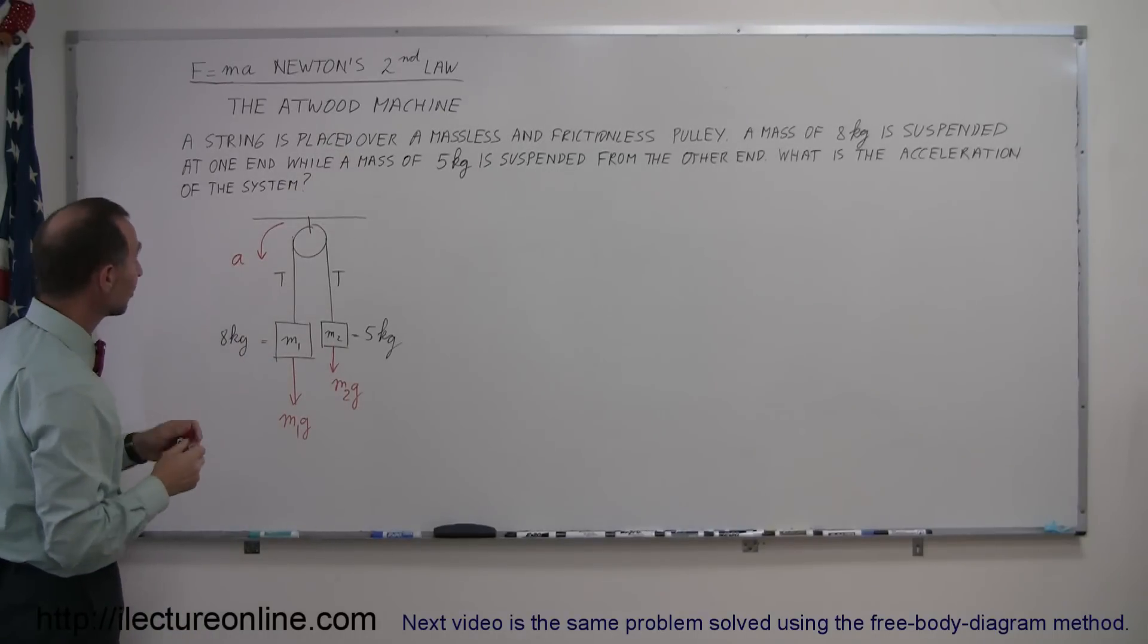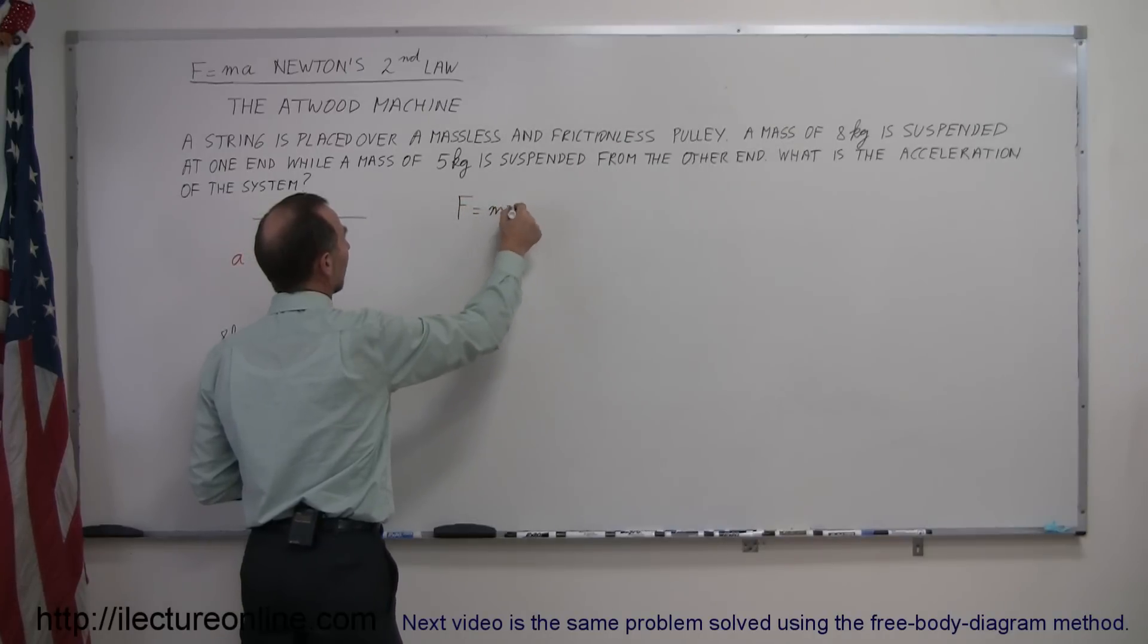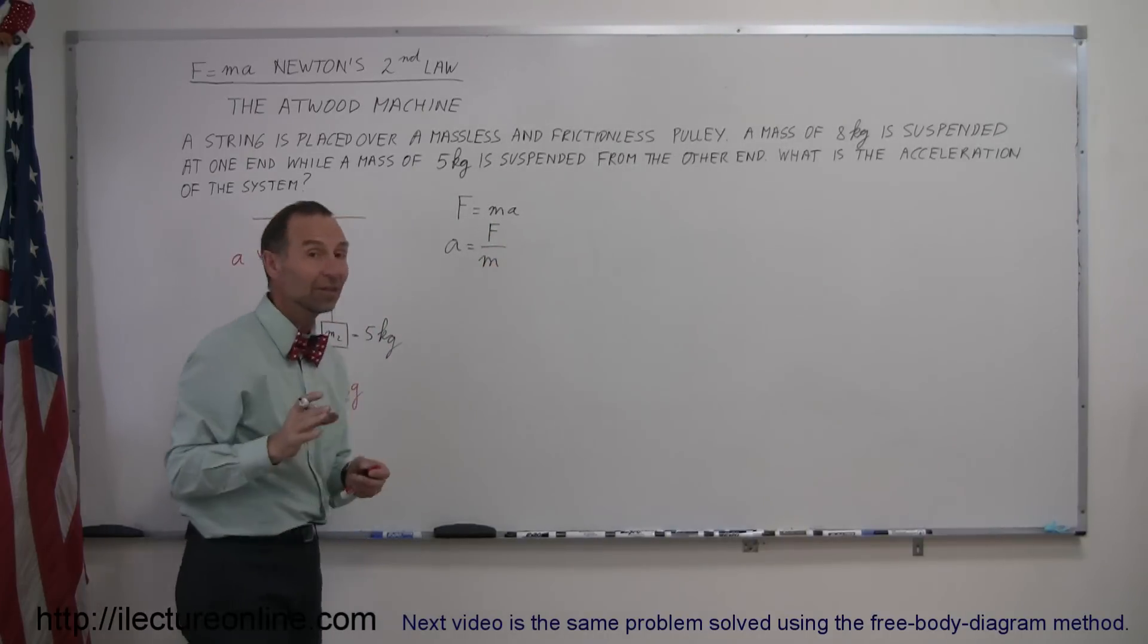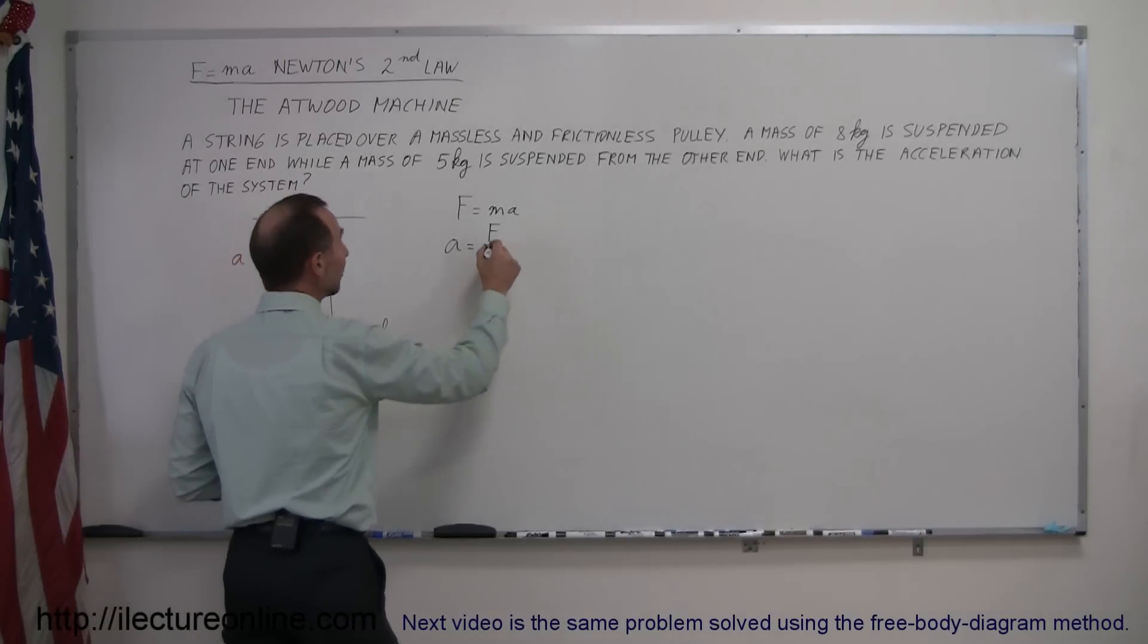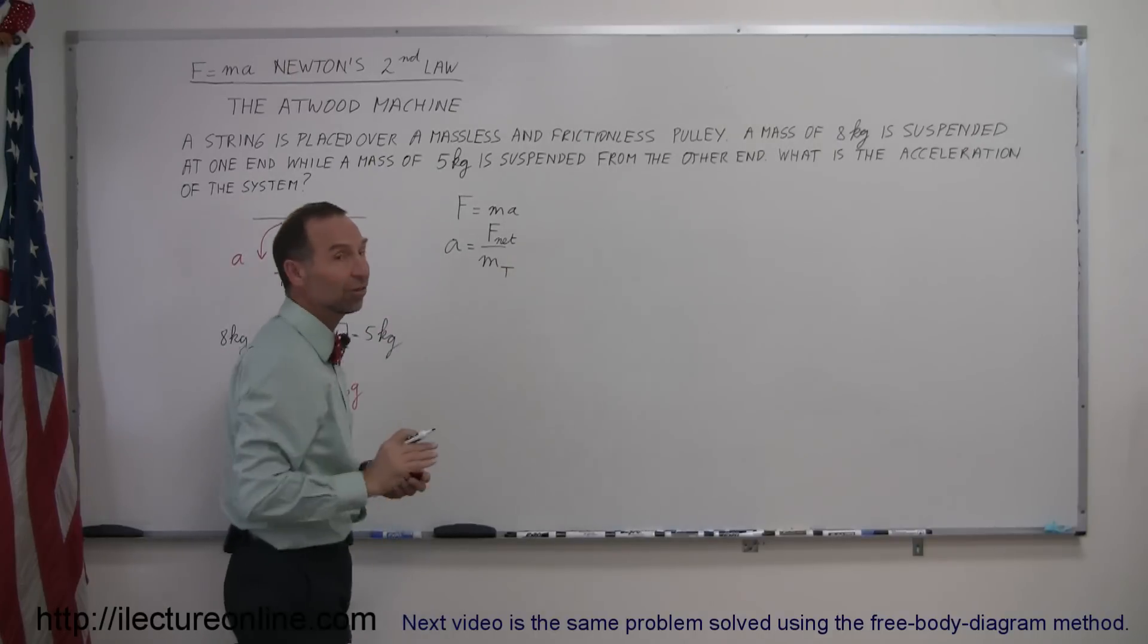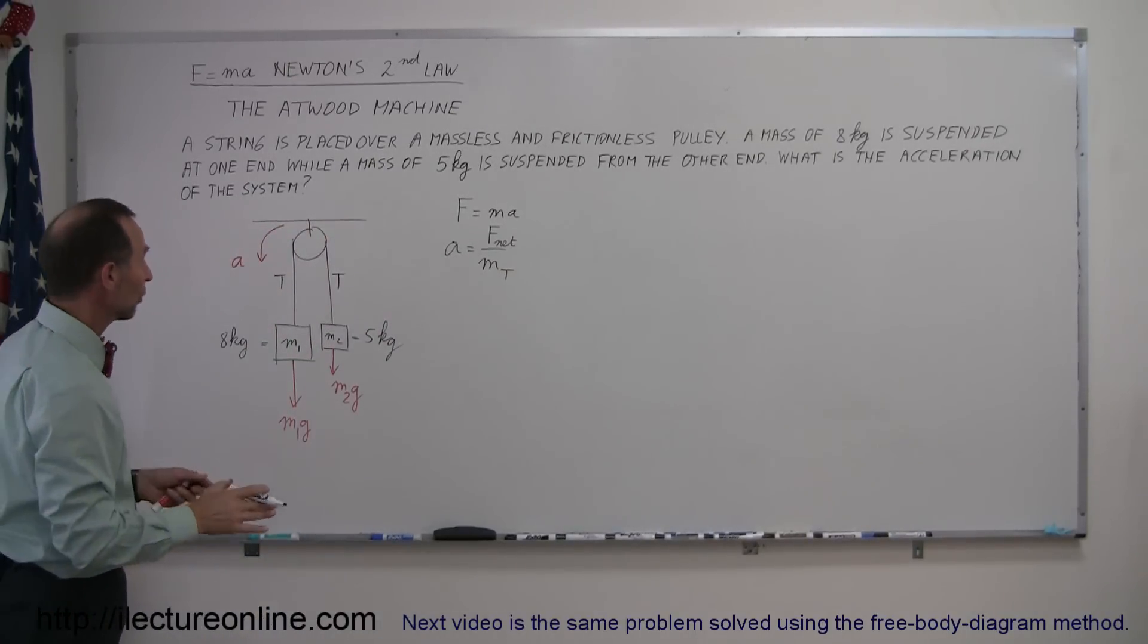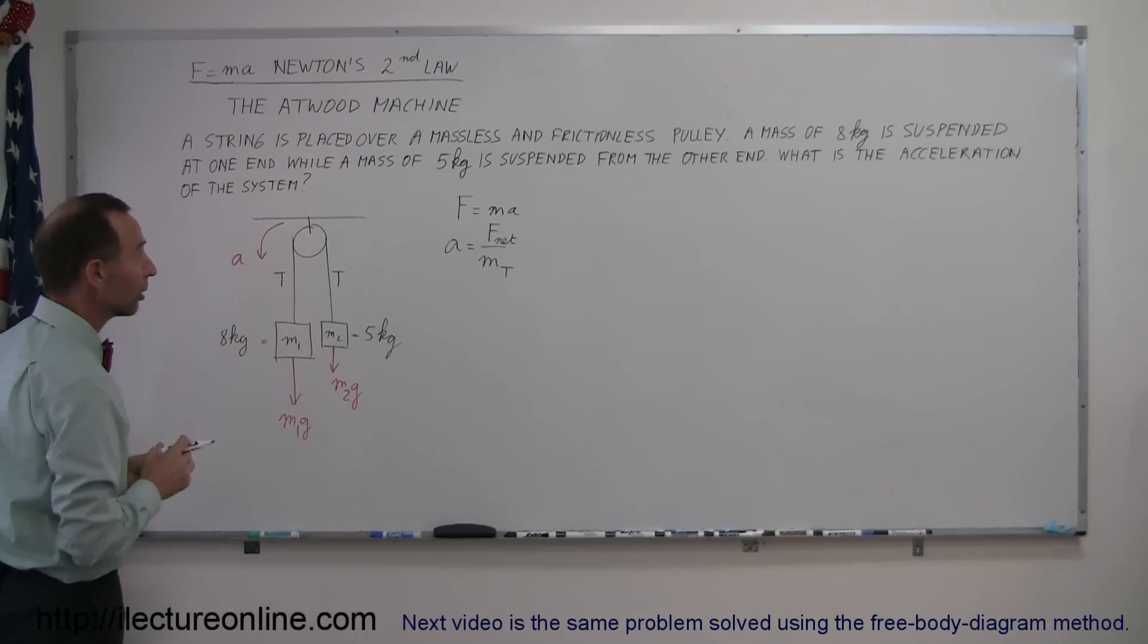Now, using the equation F equals mA, we then realize that the acceleration will be equal to the force applied divided by the mass. Now in this case, there are two masses and there are two forces. So we want the net force acting on the whole system and the total mass of the system, because the net force will act on both masses, so we have to account for both masses, so we'll call it mass total.